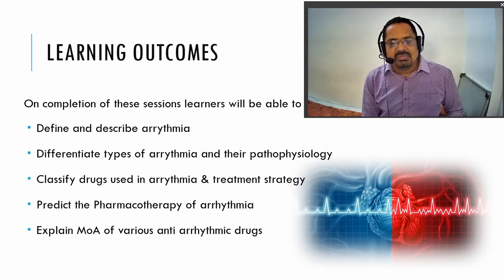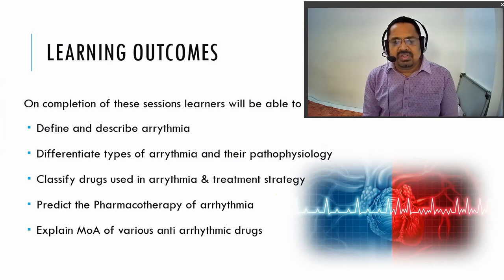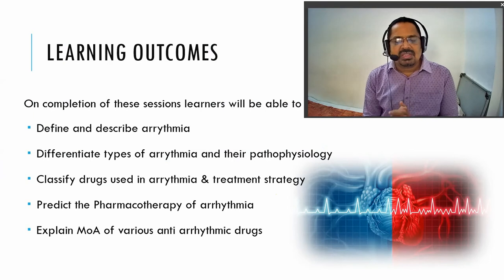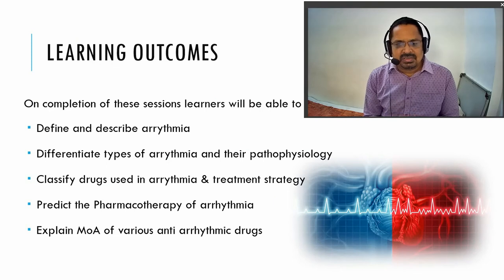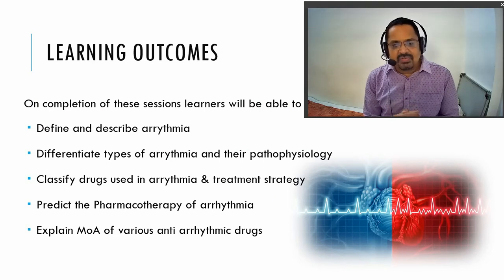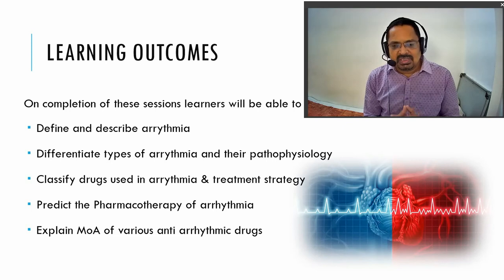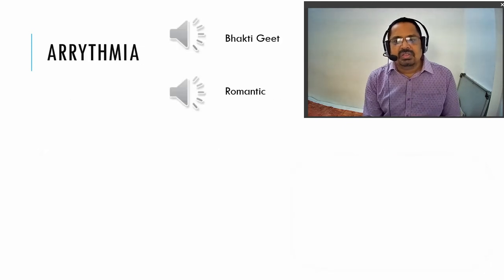Define and describe arrhythmia, differentiate the different types of arrhythmia and their pathophysiological consequences, classify the different anti-arrhythmic agents, determine the strategy behind treatment of arrhythmia, predict the pharmacotherapy for arrhythmia, and explain the mechanism of various anti-arrhythmic agents.